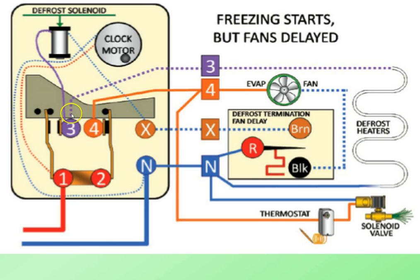We've now broken the 115 volts to the defrost heaters and the defrost heaters are off. But remember, this coil is still at 55 degrees Fahrenheit — we don't want to be running the fan while the coil is at 55 degrees because then we're blowing 55-degree air into the freezer. So the 115 volts comes up through terminal four and we do have power to the evap fan.